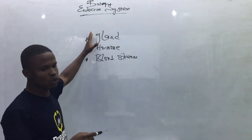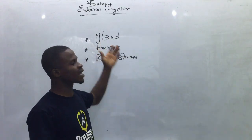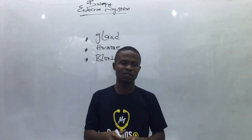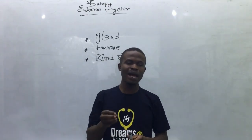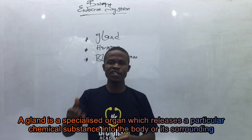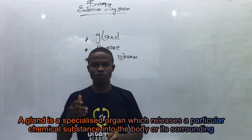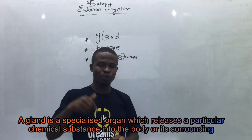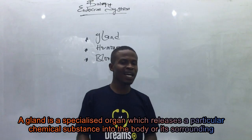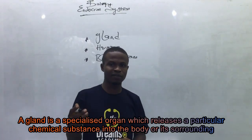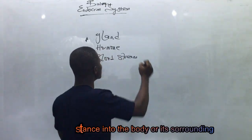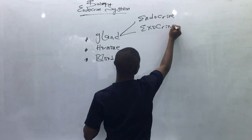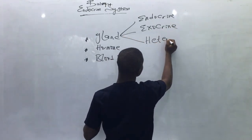We need to know what a gland is. A gland is a specialized organ which secretes a particular chemical substance into the body or into its surroundings. At this level, take note, we have three types of glands in the body: we have the endocrine, we have the exocrine, and we have the heterocrine.